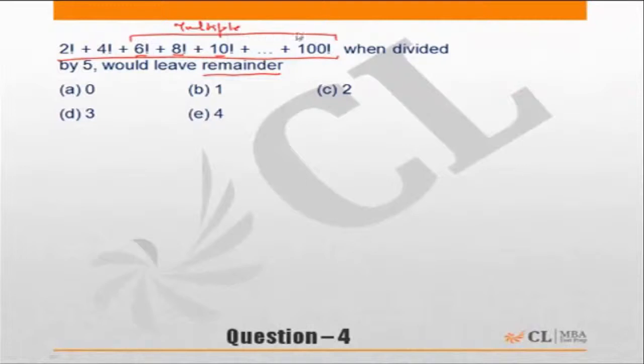So some remainder from all of this has to be zero. All the numbers, six factorial plus eight factorial up to hundred factorial, the remainder on account of these will be equal to zero because they are multiples of five.